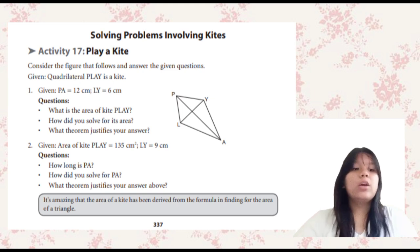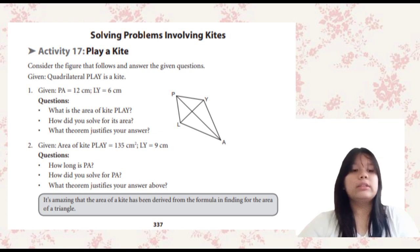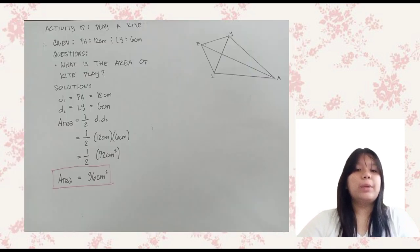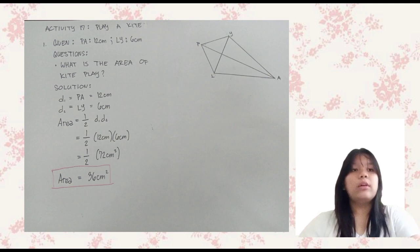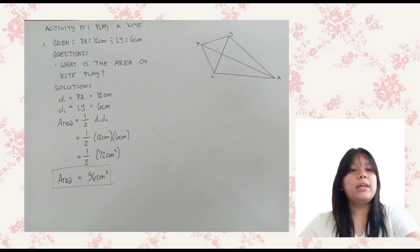Question 1: What is the area of kite PLANE? To find the area, we first identify the diagonals of the kite, which are PA and LY. Using the formula for the area of a kite — half the product of its diagonals — with PA equals 12 cm and LY equals 6 cm, we get: Area equals one-half times 12 cm times 6 cm equals 36 cm². The area of kite PLANE is 36 cm².